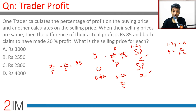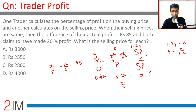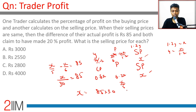Correctly calculated, profit = X - X/1.2 = 0.2 × (X/1.2) = X/6. The difference in profits is 85: X/5 - X/6 = 85. LCM is 30, so (6X - 5X)/30 = X/30 = 85, giving X = 85 × 30 = 2550. The answer is choice B.